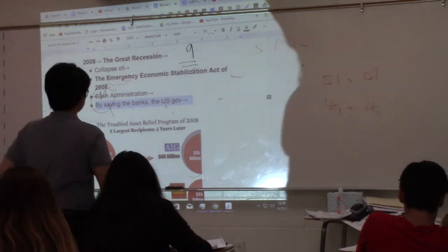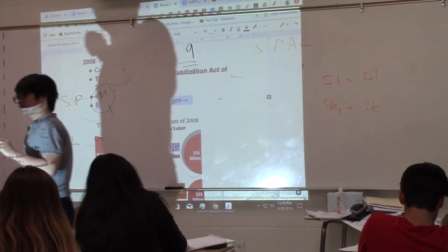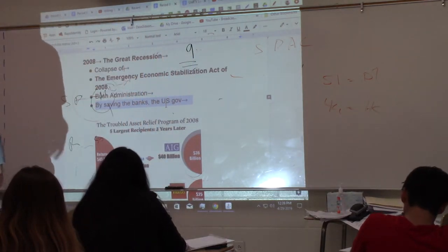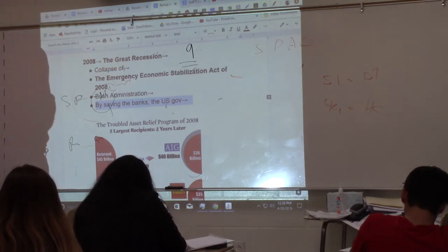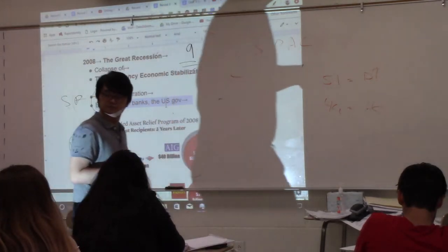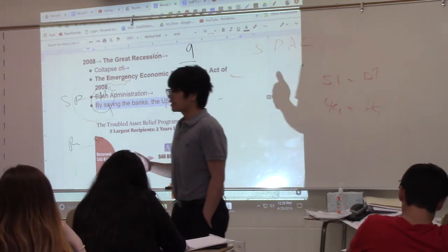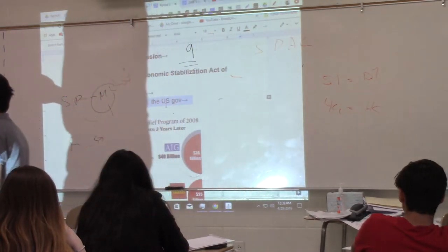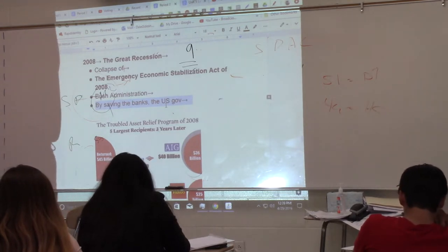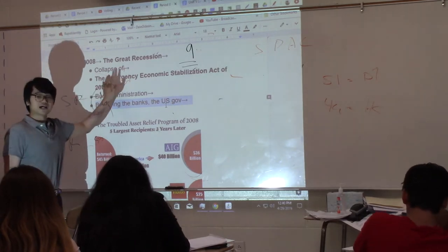In 2008 we get a recession — not quite a depression, but a recession. We had recessions in the 70s and the early 1990s before the Clinton boom, but this is the worst one — the Great Recession of 2008. We were on the brink of another depression. Some of your parents or relatives may have lost their house or their job during this recession. This was due to the collapse of the housing market.